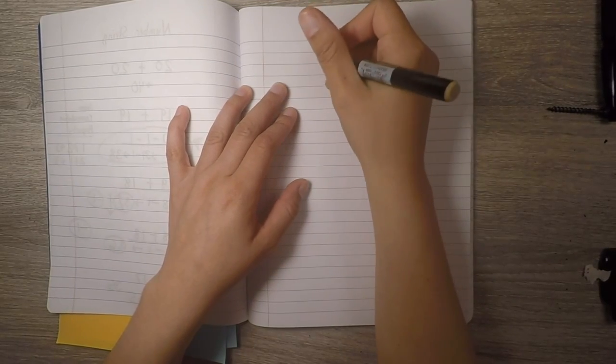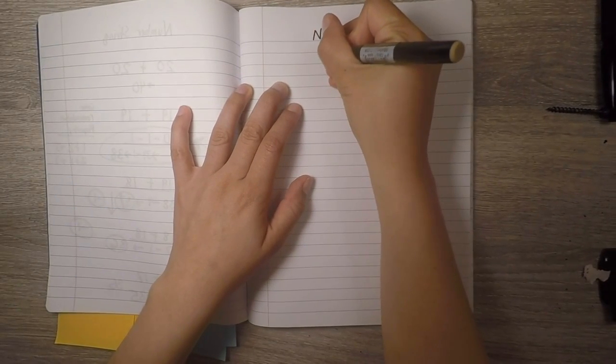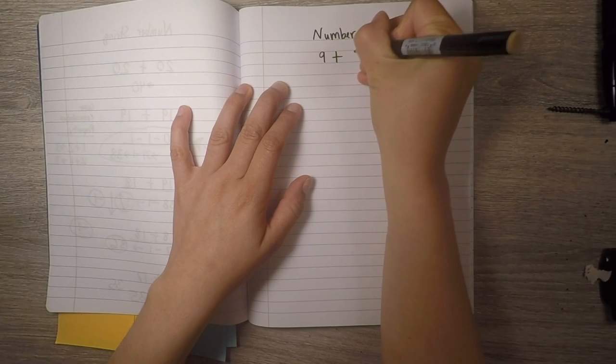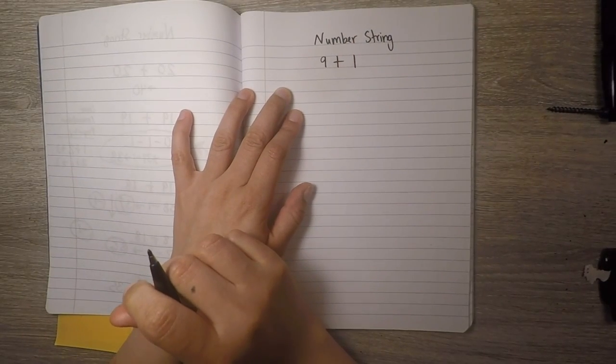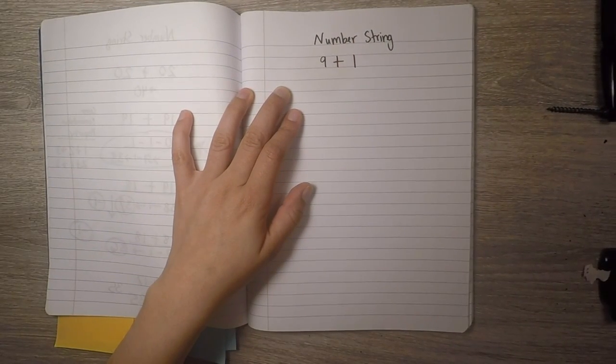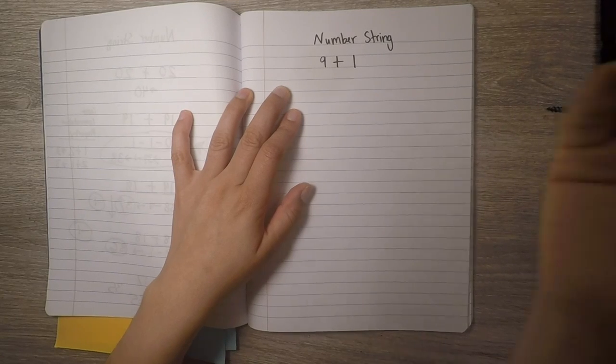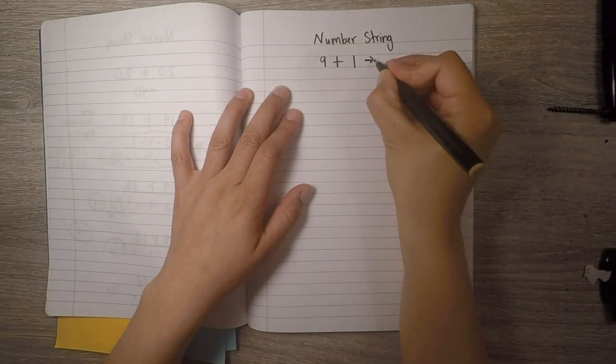Ready? So the first one, and I'm going to be very disappointed if you don't know it right away, is nine and one more. Did you get it? All together, what is nine plus one? That's right. Ten.